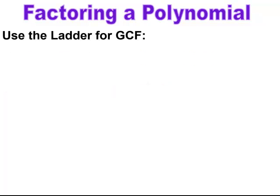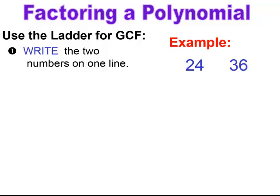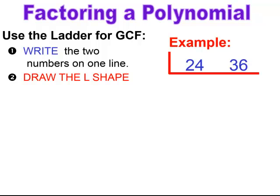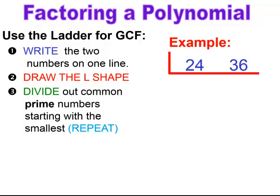One method for finding the GCF of numbers is the ladder method, similar to the ladder method for finding the least common multiple. You're going to take the numbers and write them in a row, and then put a little box or L-shape around them. Then you're going to find common prime numbers that are factors in the numbers you are looking for the GCF of.